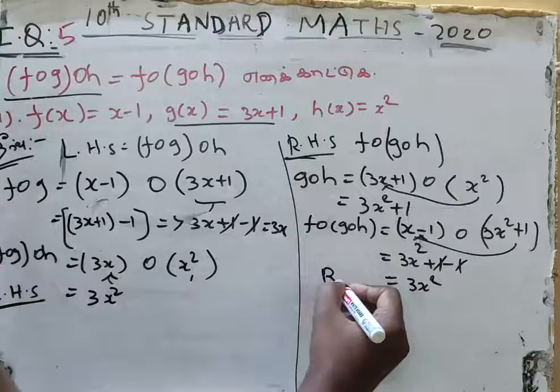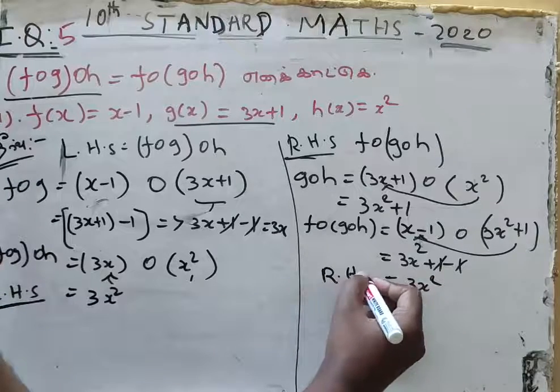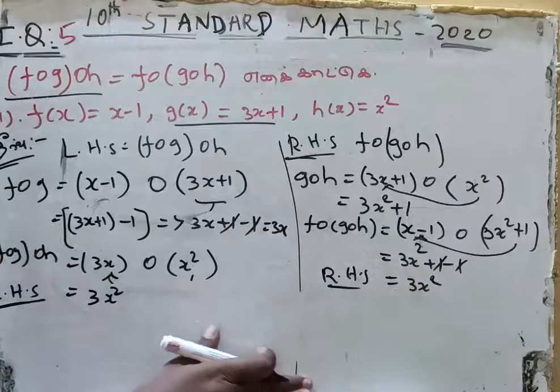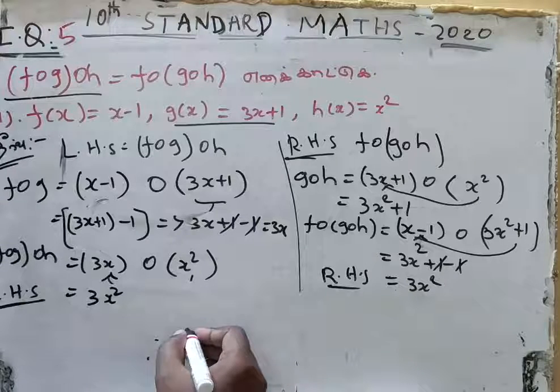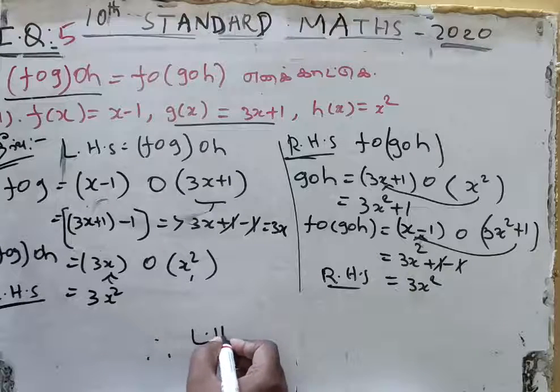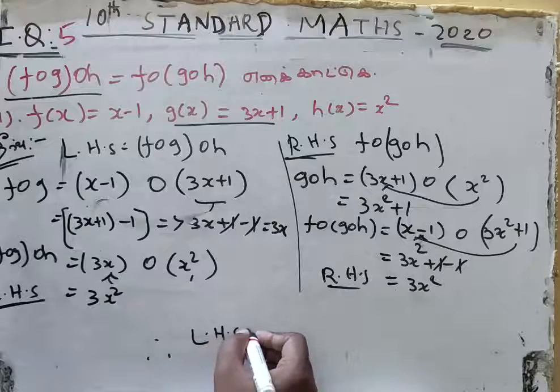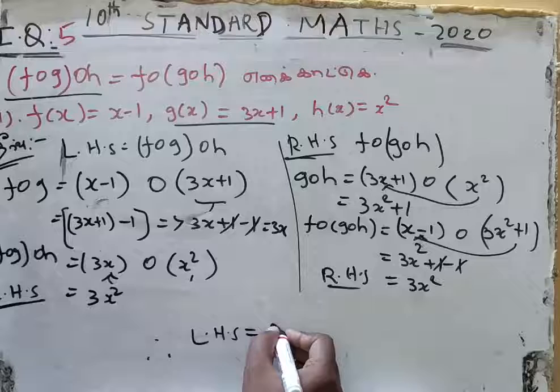This will be the RHS. Therefore, LHS is equal to RHS, which confirms the associativity property.